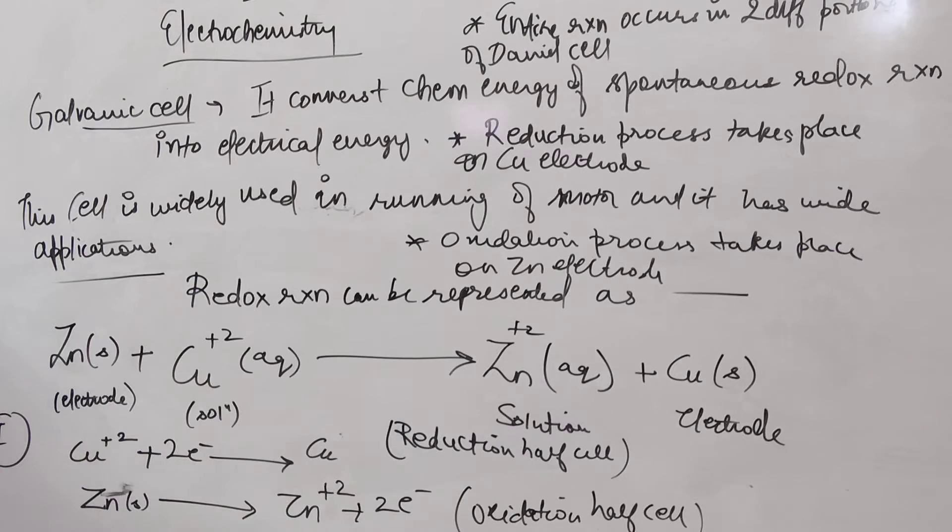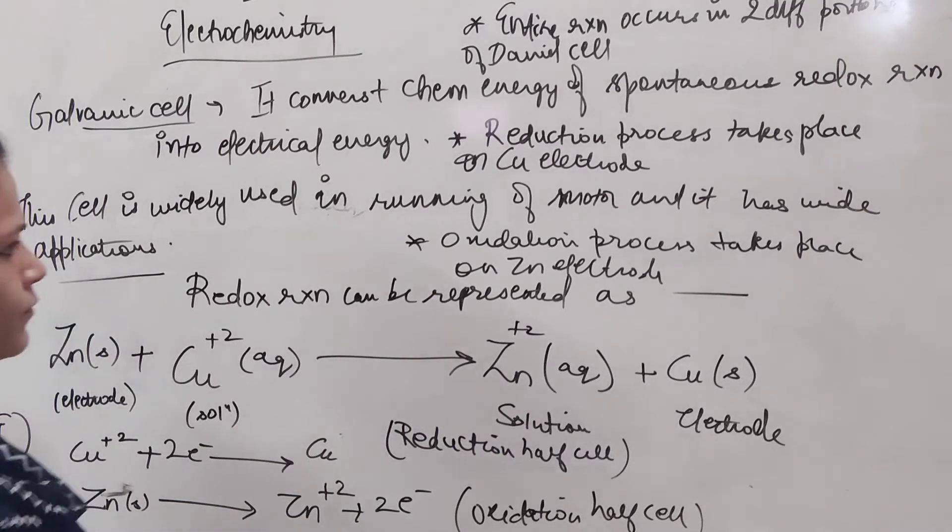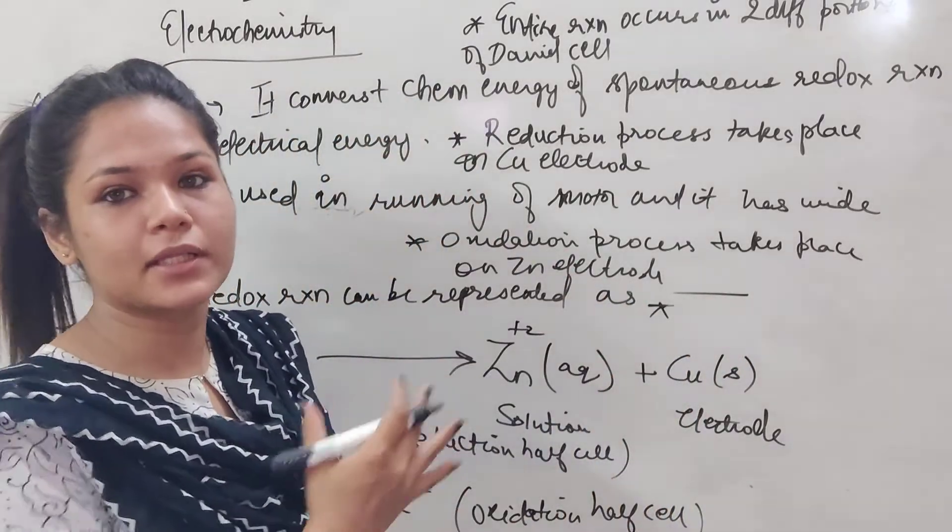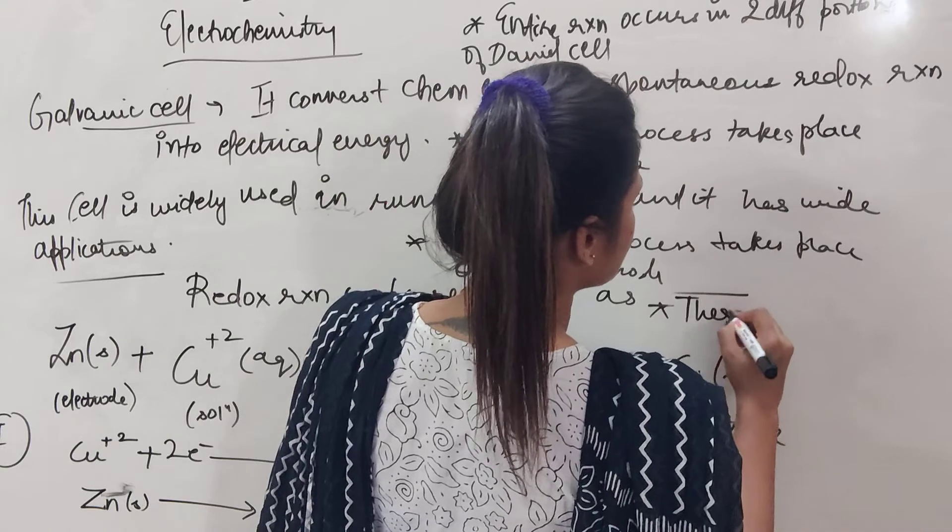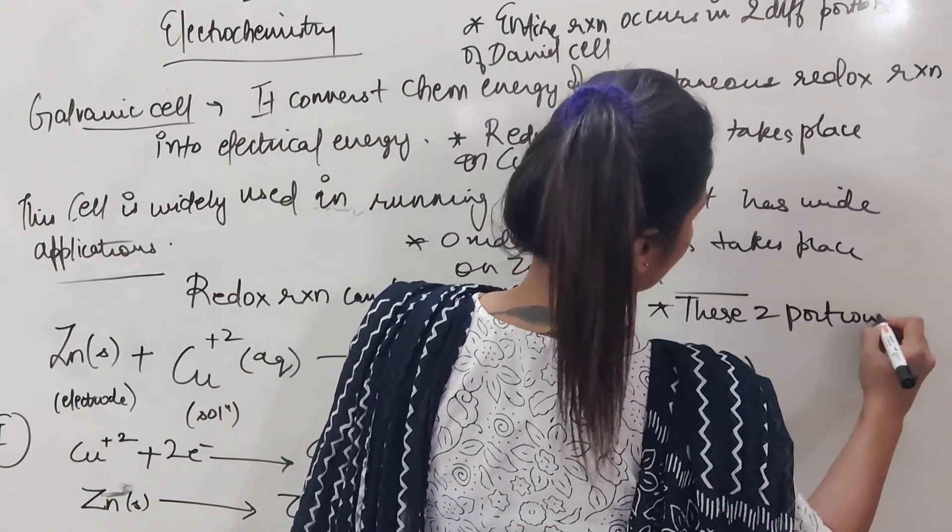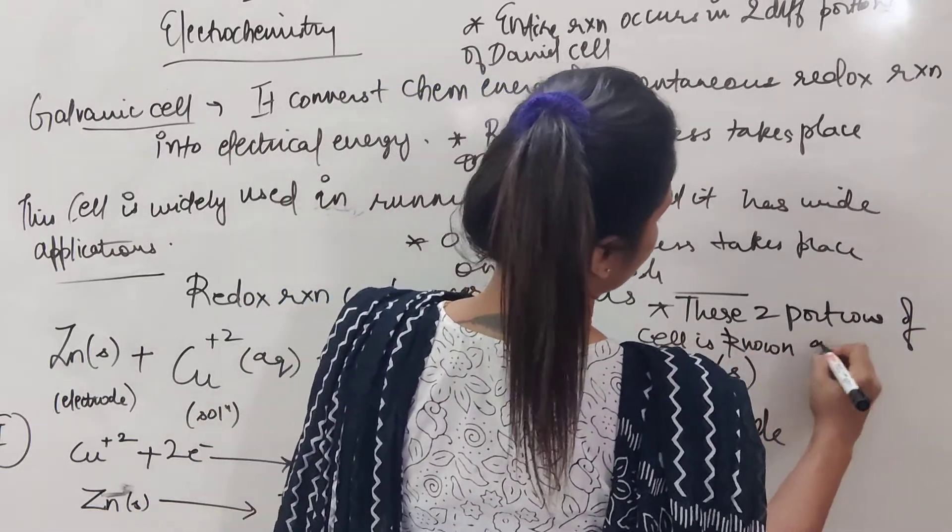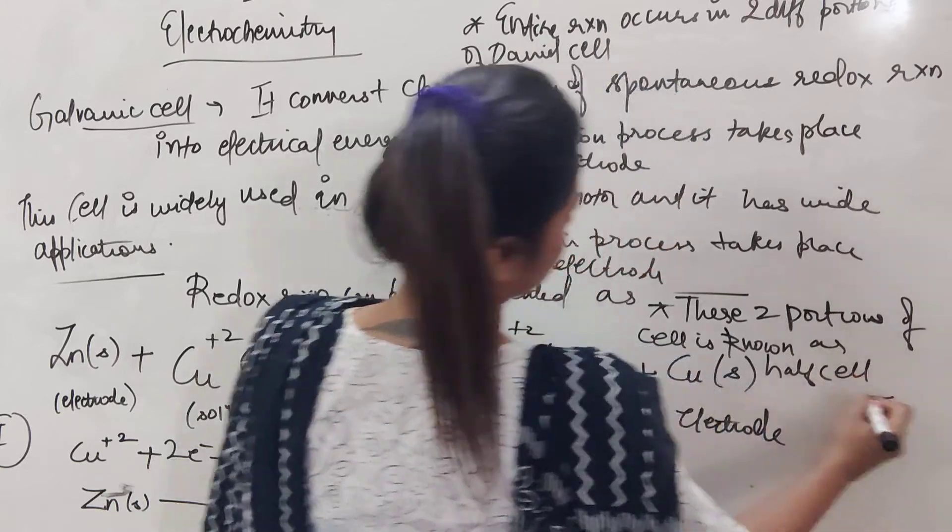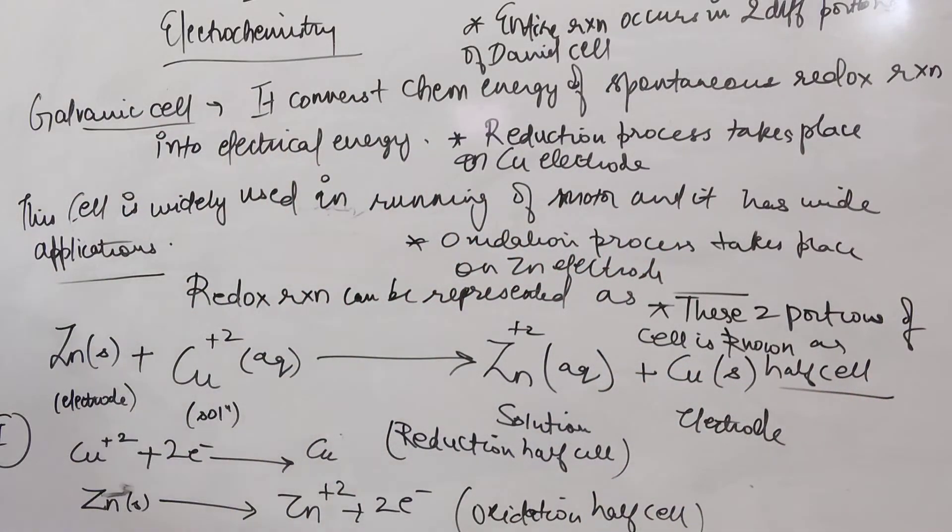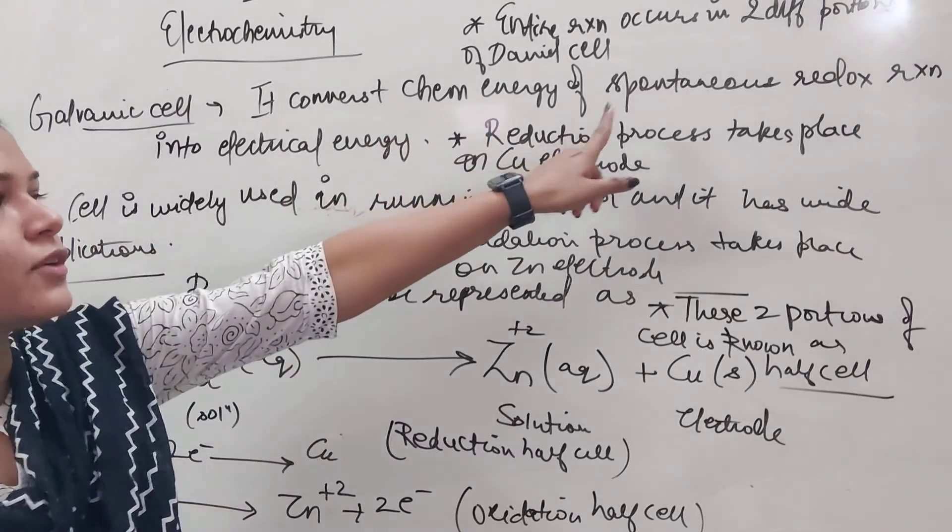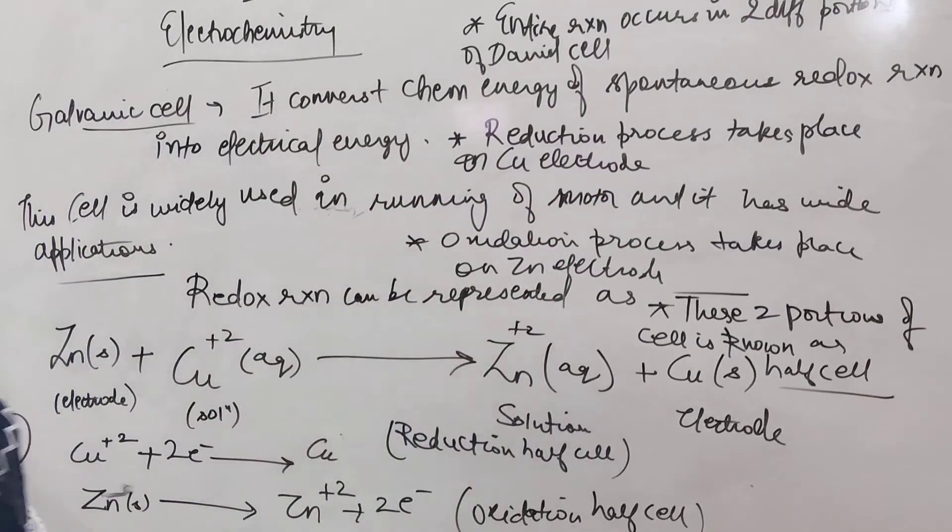So we will tell you which electrode is which, which reaction happens. These two portions of cell, on one side reduction is happening, on the other side the oxidation is happening. These two portions of cell is known as half cell. And it is very much clear to you now, reduction will take place at copper electrode and oxidation will take place at zinc electrode.